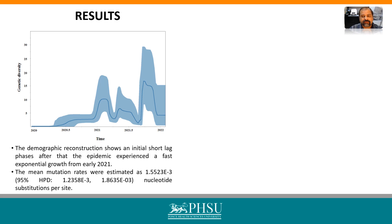Phylogenetic relationships and divergence time analysis were performed with BEAST software, using the collection date of isolation as the calibration point. The demographic reconstruction showed an initial short lag phase, after which the epidemic experienced fast exponential growth from early 2021, followed by a stationary phase at the end of 2021.